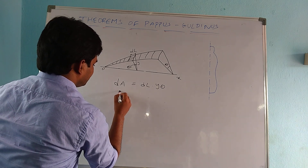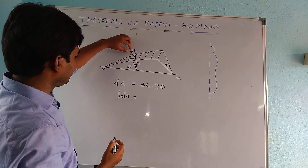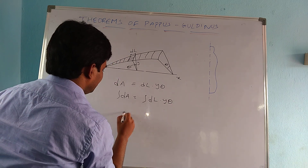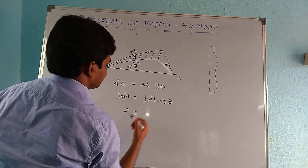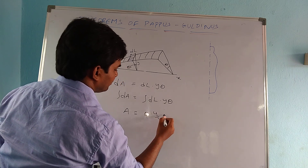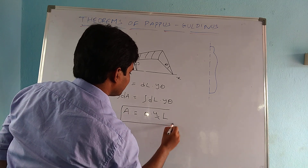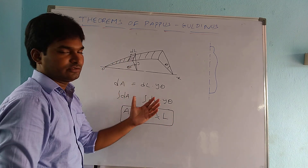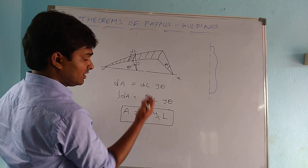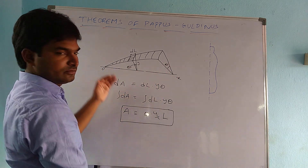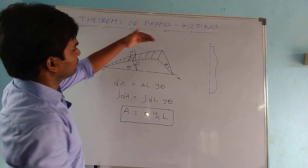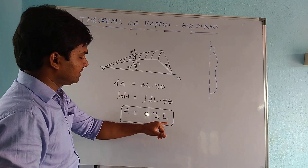To calculate the final area, I am going to integrate because we have taken a small strip. So the integral of dL into y times theta gives us the final surface area, applying boundary conditions: theta times yc times the total length L. By this way, we calculate the surface area of plane curves and plane areas rotating about a non-intercepting axis. Here yc means the centroidal distance of the total curve with respect to the Ox axis, and L is the total length of the curve.